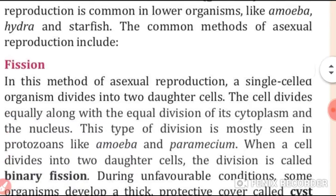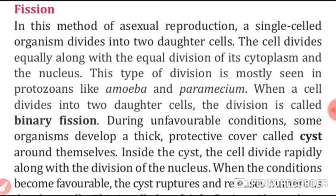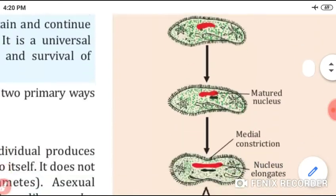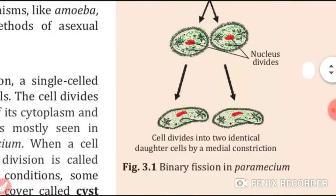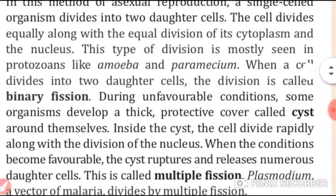The common methods of asexual reproduction — first is fission. In this method, a single-celled organism divides into two daughter cells. This cell divides equally along with equal cytoplasm and the nucleus. We can see this in amoeba and paramecium. When a cell divides into two daughter cells, this division is called binary fission.